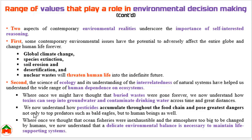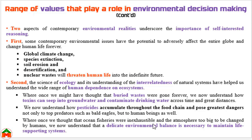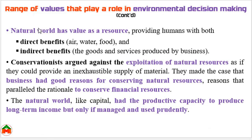As human beings we are interdependent with other environmental species. Although we once thought that waste was gone forever, toxins can seep into groundwater and contaminate drinking water. Pesticide use can accumulate throughout the food chain and pose the greatest dangers in the ecological system. And once we thought ocean fisheries were inexhaustible, but we can now see they are being exhausted. A delicate environmental balance is necessary to maintain life-supporting systems.